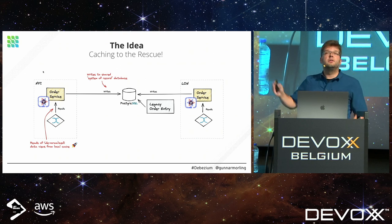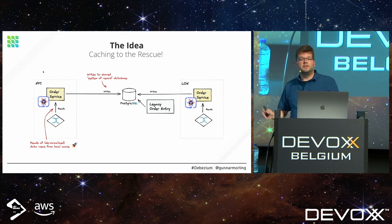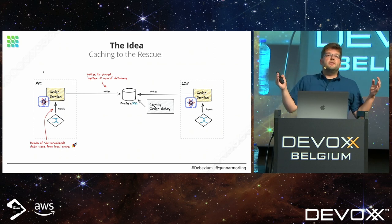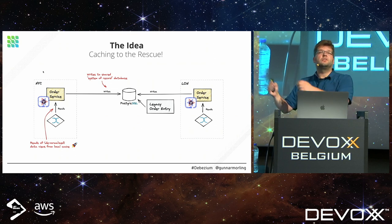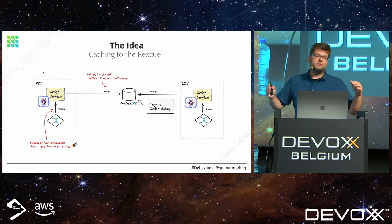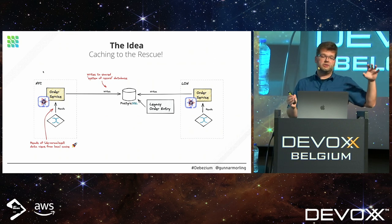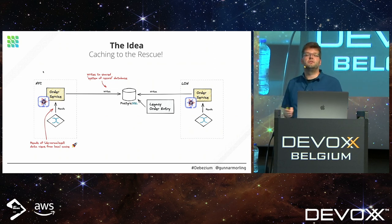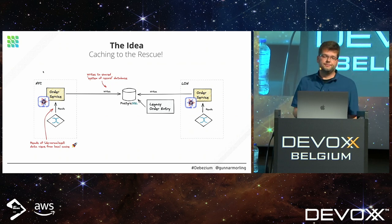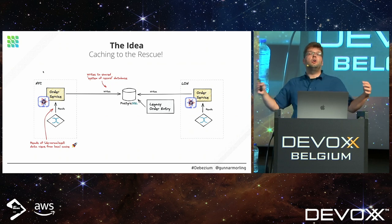Let's get back to our problem statement. The obvious thing to do when we have slow reads is to add caches to our application architecture. We add caches in those different geographies — one in New York City, another in London — so we can serve reads from those local caches. We'll still do all the writes to the canonical Postgres database in the middle.